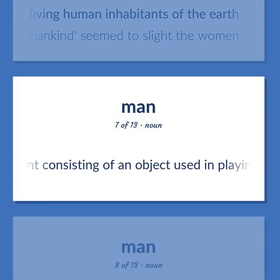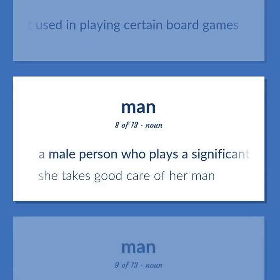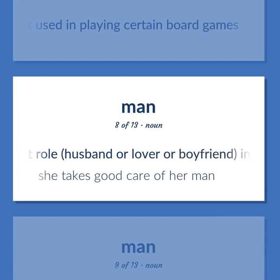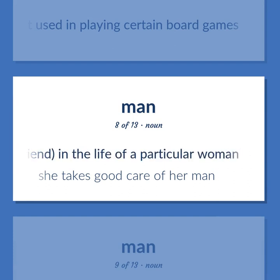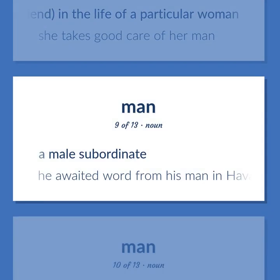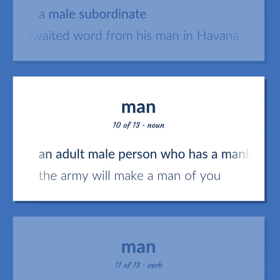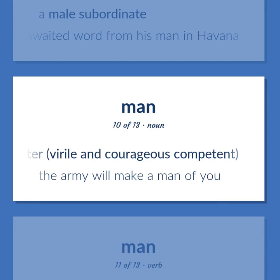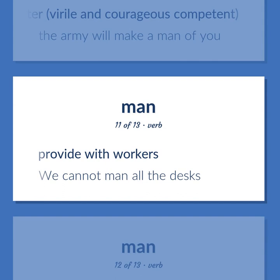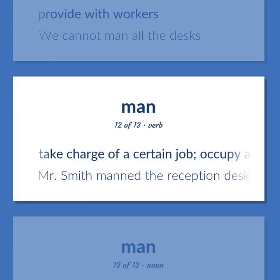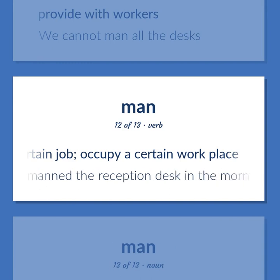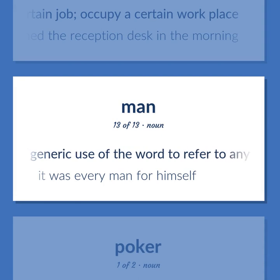Game equipment consisting of an object used in playing certain board games. A male person who plays a significant role — husband or lover or boyfriend — in the life of a particular woman — she takes good care of her man. A male subordinate — he awaited word from his man in Havana. An adult male person who has a manly character, virile and courageous — the army will make a man of you. Provide with workers — we cannot man all the desks. Take charge of a certain job; occupy a certain workplace — Mr. Smith manned the reception desk in the morning. The generic use of the word to refer to any human being — it was every man for himself.